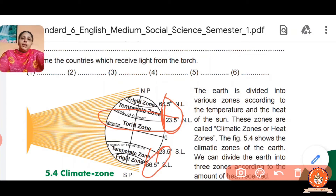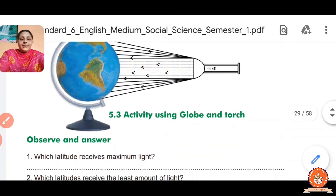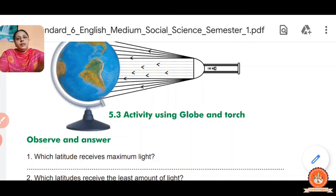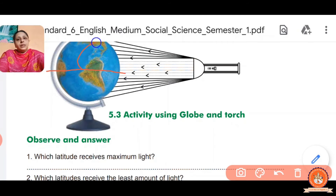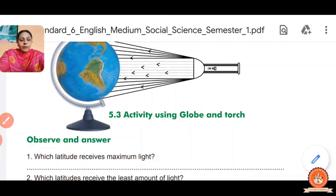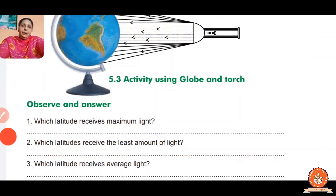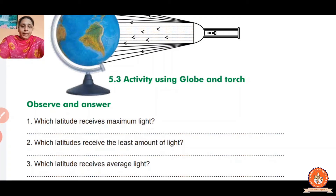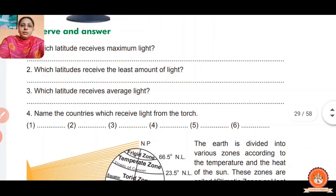Name the countries which receive more light. Countries receiving more light are in Asia — Sri Lanka, Thailand, Myanmar, Indonesia, India, etc. African countries such as Sudan, Kenya, Ethiopia, Uganda also receive more light. And South American countries like Brazil and Colombia fall into the zone that receives more light.